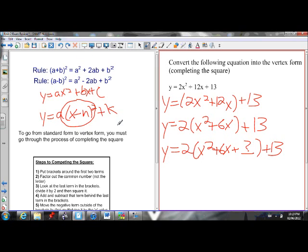So half of 6 is 3, so 3 squared is 9. So x squared plus 6x plus 9. But I can't just go around just adding 9 to equations and claiming that they're equal. If I add 9, I also have to subtract 9.